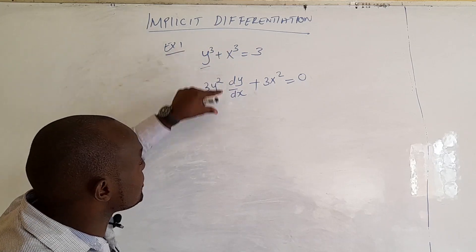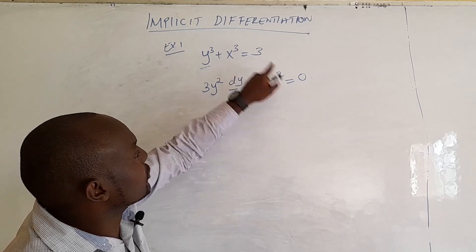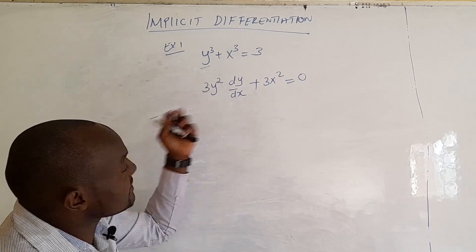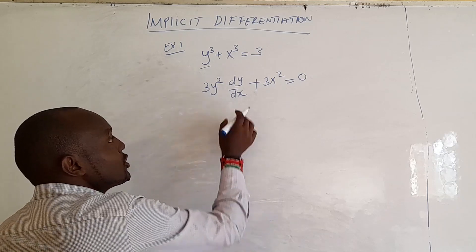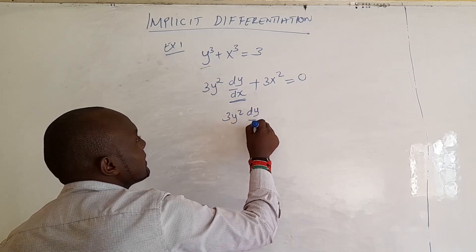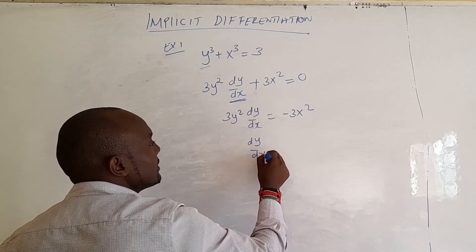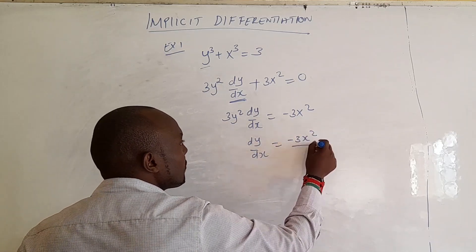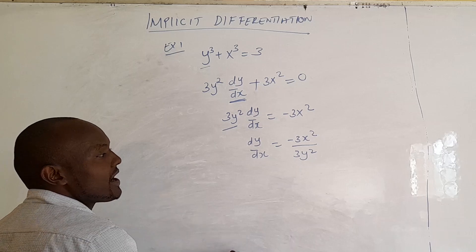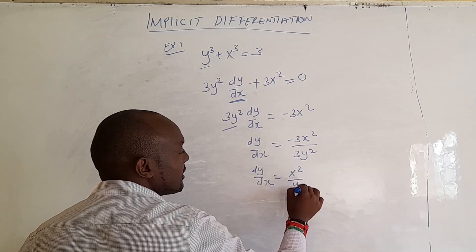We must add dy/dx. When it comes to x cubed, bring 3 down and we get x squared. When you differentiate a constant you get zero. So our equation is 3y squared dy/dx plus 3x squared equals zero. We make dy/dx the subject: 3y squared dy/dx equals negative 3x squared, so dy/dx equals negative 3x squared over 3y squared, which simplifies to negative x squared over y squared.